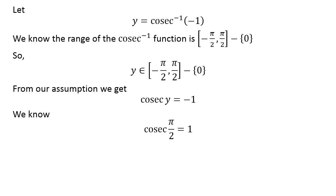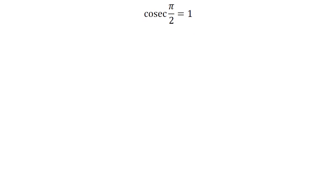We know cosecant of half of pi is equal to 1. We also know the identity cosecant of minus x is equal to minus cosecant of x.